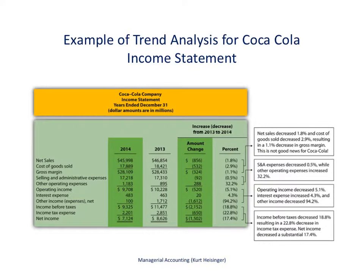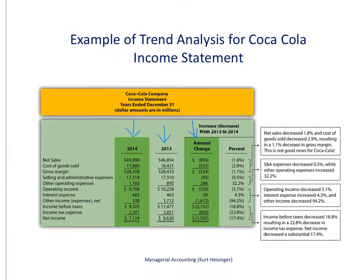Here's an example of trend analysis for Coca-Cola's income statement. This comes right from Coca-Cola's income statement. We have the new information — 2014 in this case — and the old information, and then we have the amount of change. So the amount of change is the current year 2014 minus the base year. For Net Sales, all in millions, it's $45,998 million minus $46,854 million, which equals a negative change of $856 million, because net sales went down from 2013 to 2014.